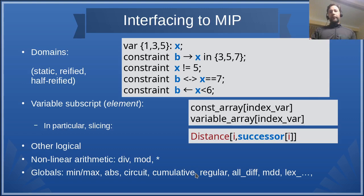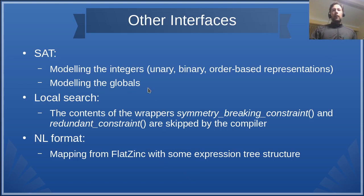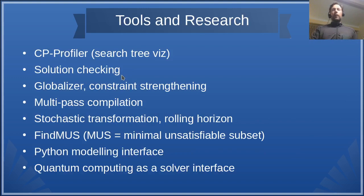Other interfaces are SAT, and you need to decide how you model the integers and model the global constraints. Then local search solvers, and they don't like symmetry breaking constraints and redundant constraints. So it is recommended that such constraints are wrapped into the corresponding predicates so they can be skipped by the compiler. And there is an interface to NL format, so mapping from FlatZinc keeping some expression tree structure.